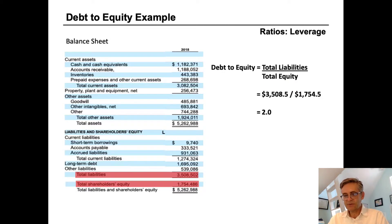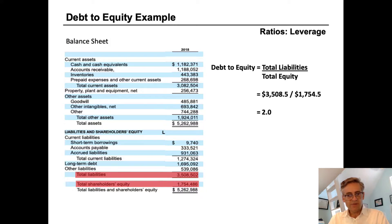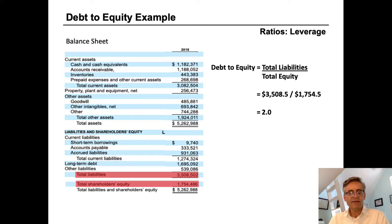This is Hasbro's 2018 year-end balance sheet and we can see that its total liabilities at this point were $3.85 billion and shareholders' equity was $1.75 billion. So we divide one by the other, $3.5 by $1.7, and we arrive at a debt-to-equity ratio of two.